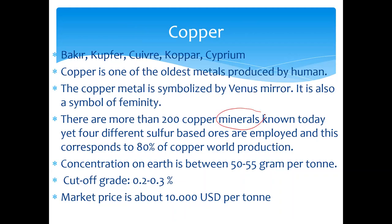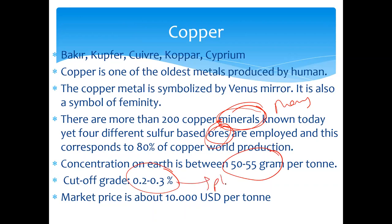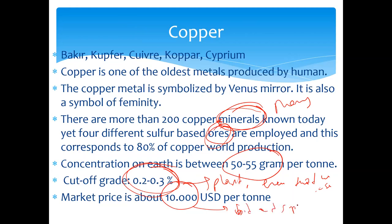Let's remember: a mineral is not an ore, but every ore is a mineral. When you make money out of a mineral, we call it ore. If you cannot get money out of it, we call it simply a mineral. So money plays a vital role in establishing these concepts. Concentration on Earth is between 50 to 500 grams per tonne. The cutoff grade is 0.2 to 0.3 depending on the plant and the energy used. Market price is about 10,000 USD, depending on market supply and demand.